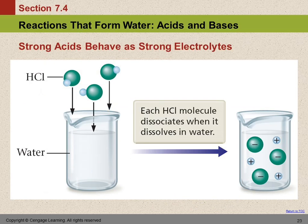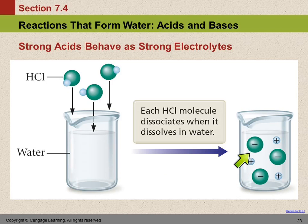Here are pictures — pictures are always good. Here we have hydrochloric acid. We put this in water and the hydrogen ions and the chloride ions separate from each other just like ionic compounds do. Strong acids behave like strong electrolytes. A solution of a strong acid will conduct electricity just like a solution of a soluble ionic compound will.